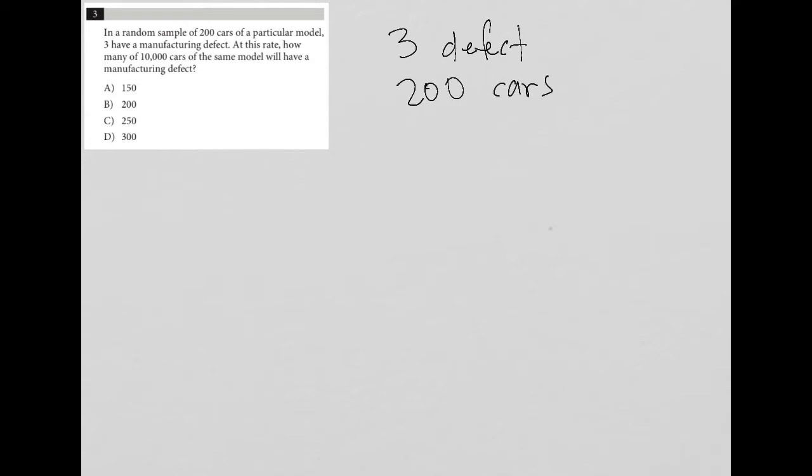The next sentence says, at this rate, how many of 10,000 cars of the same model will have a manufacturing defect? So the corresponding information here is X defects out of 10,000 cars.